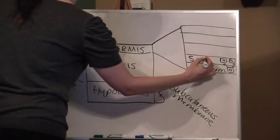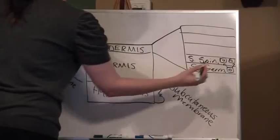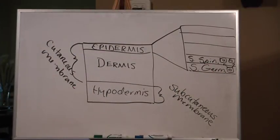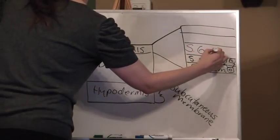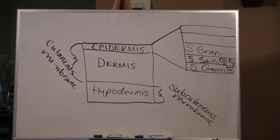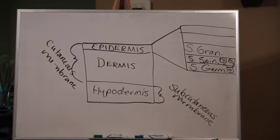The next layer up is the stratum spinosum, which contains the daughter cells — the cells just produced by the germinativum, the brand new daughter cells. The next layer up is the stratum granulosum, where cells have stopped dividing, begin making keratin — the waterproofing protein — and also begin to dehydrate. The cells are starting to dehydrate and beginning to become waterproof.